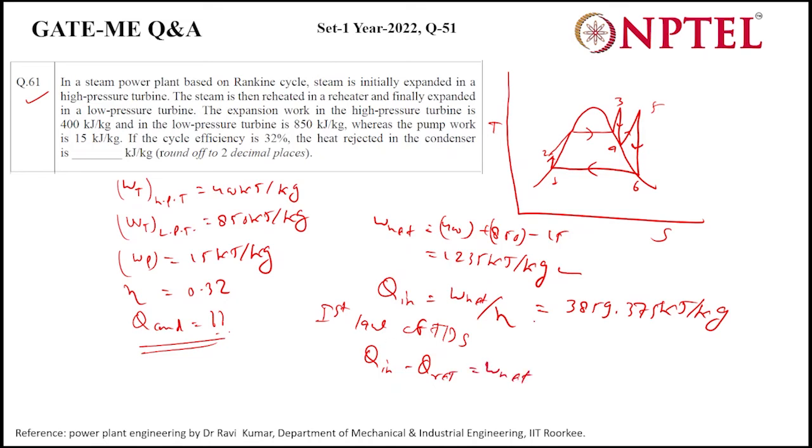So Q in we know here, and Q rejection is in the condenser. So Q rejection in the condenser would be Q in in boiler minus W net. We know both values. When we calculate this, it will become 2624.375 kilojoules per kg.